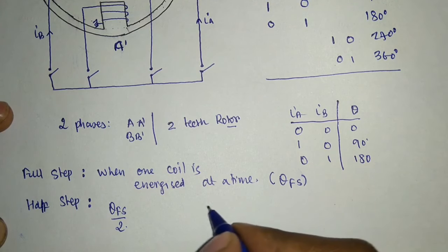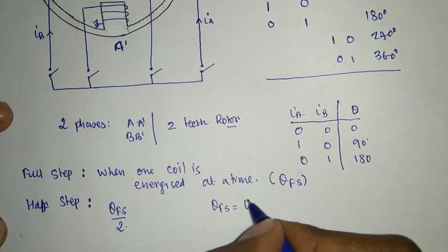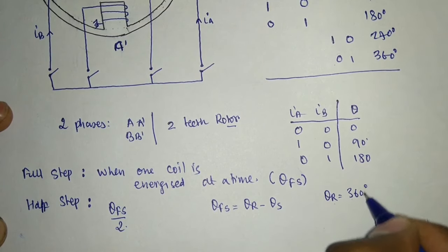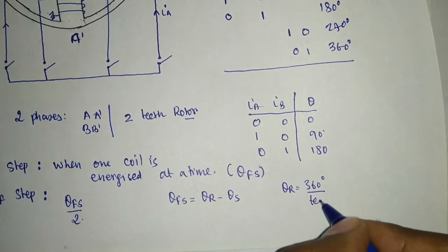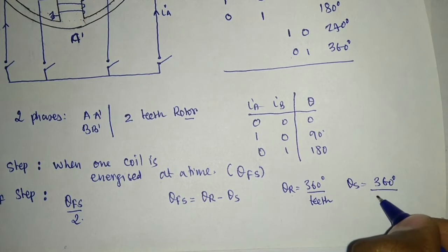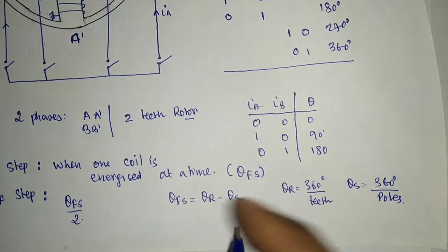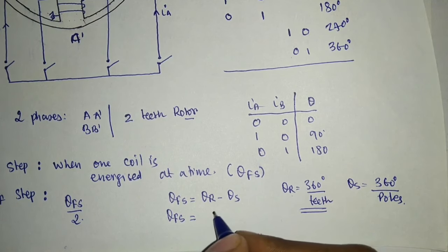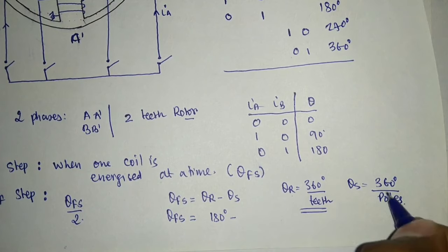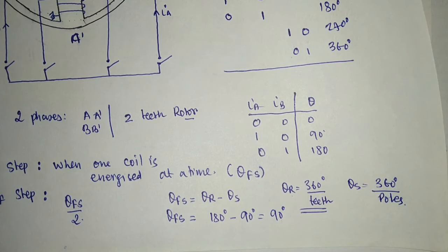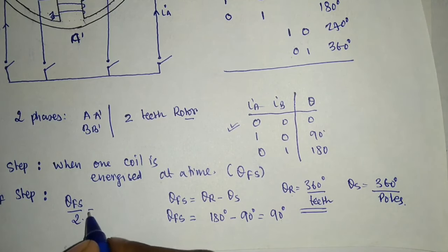The formula for full step angle theta_FS is: theta_FS = theta_rotor − theta_stator, where theta_rotor = 360° / number of teeth on the rotor, and theta_stator = 360° / number of poles on the stator. For our case: theta_rotor = 360°/2 = 180°, theta_stator = 360°/4 = 90°, so the full step angle is 90 degrees. When energizing one coil at a time, we get a 90-degree step angle, and the half step angle is therefore 45 degrees.